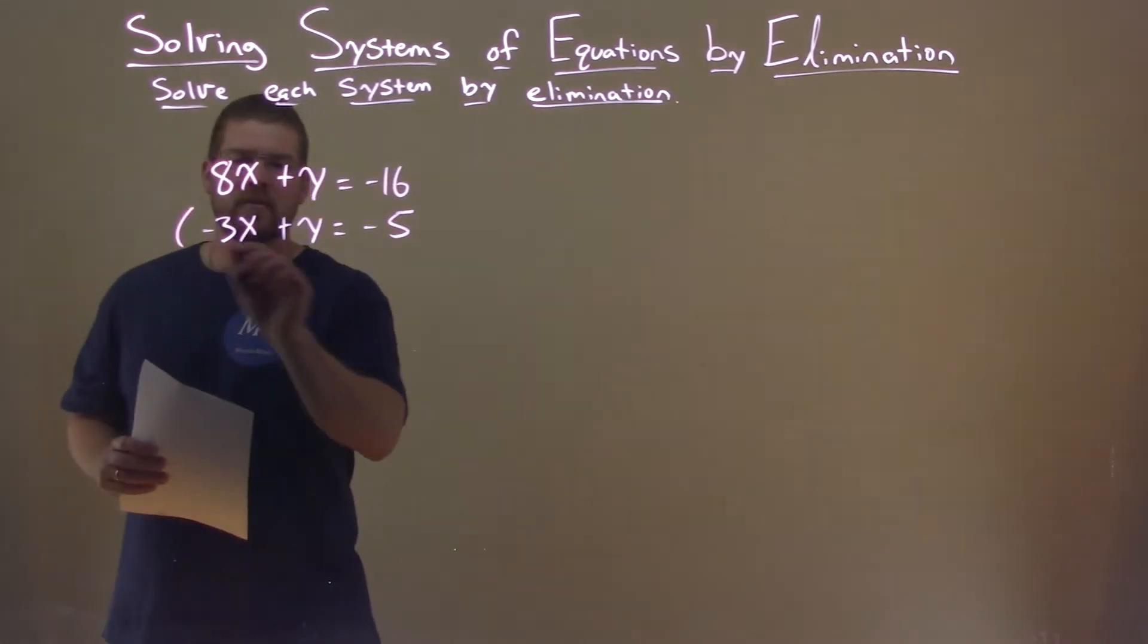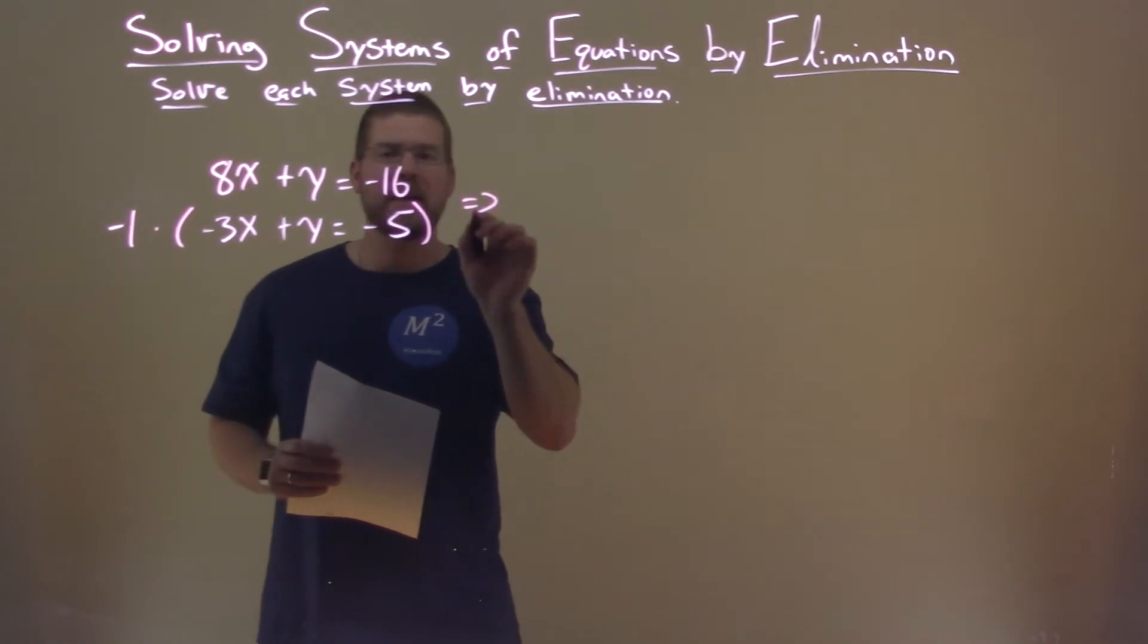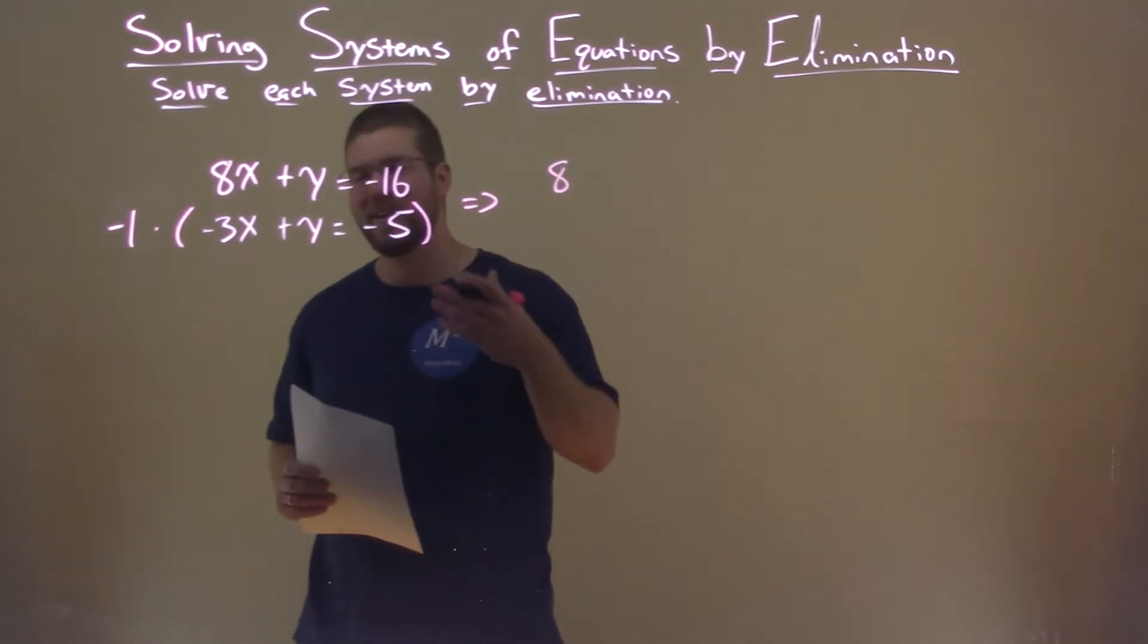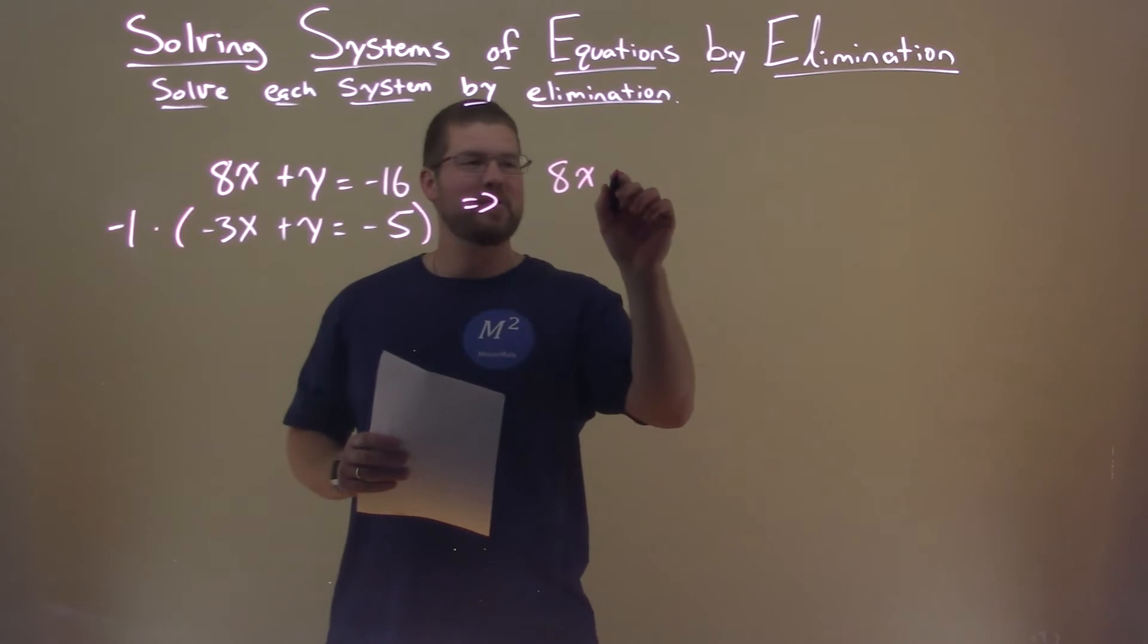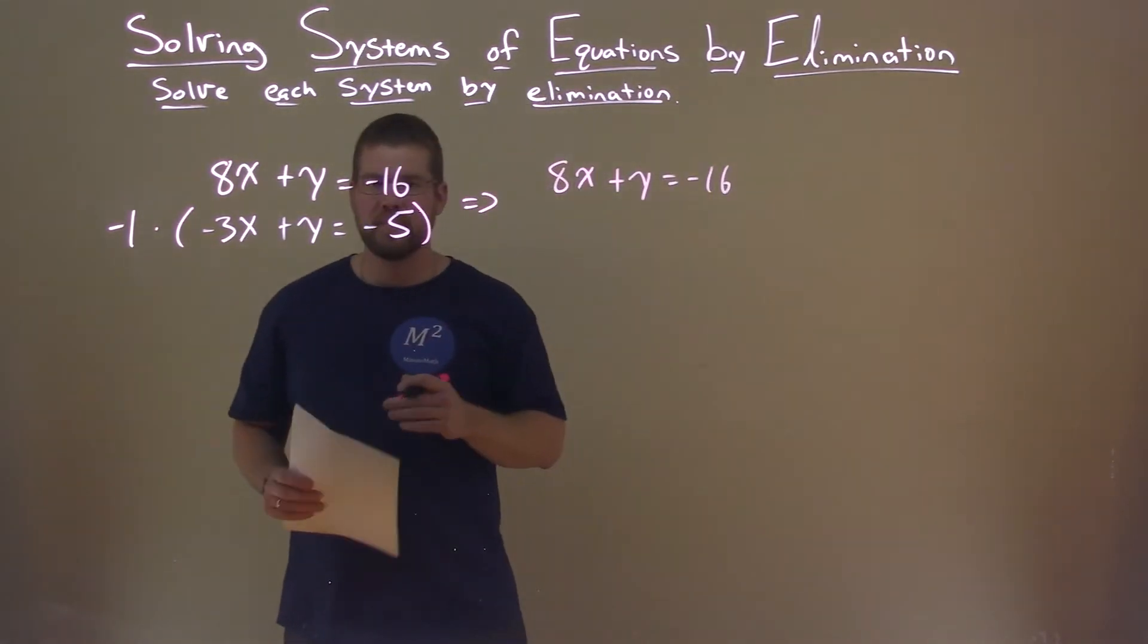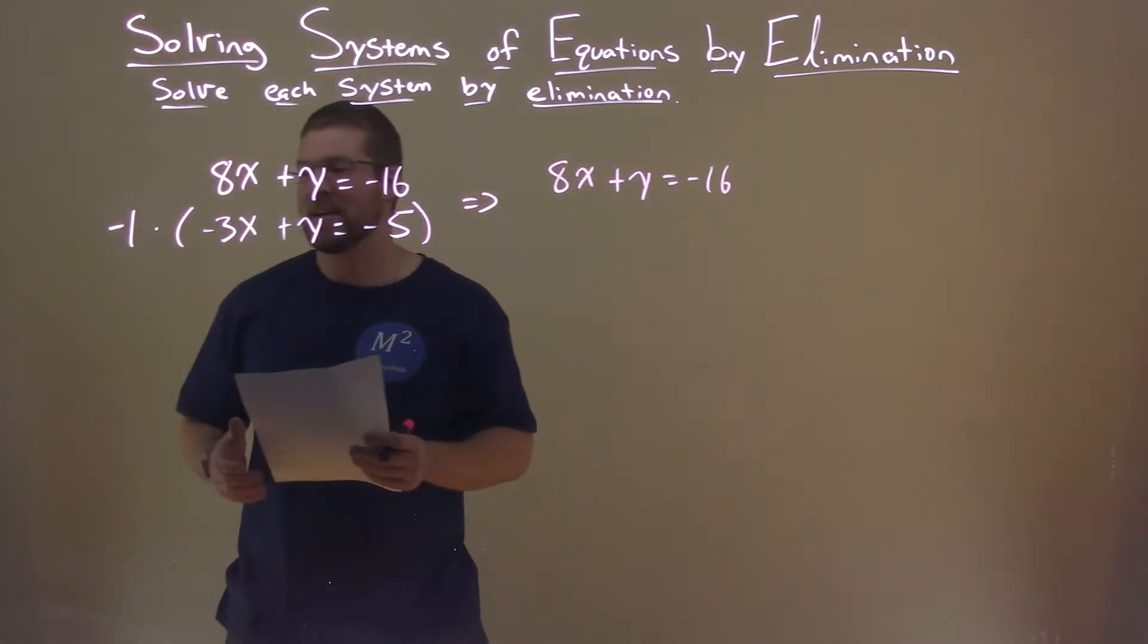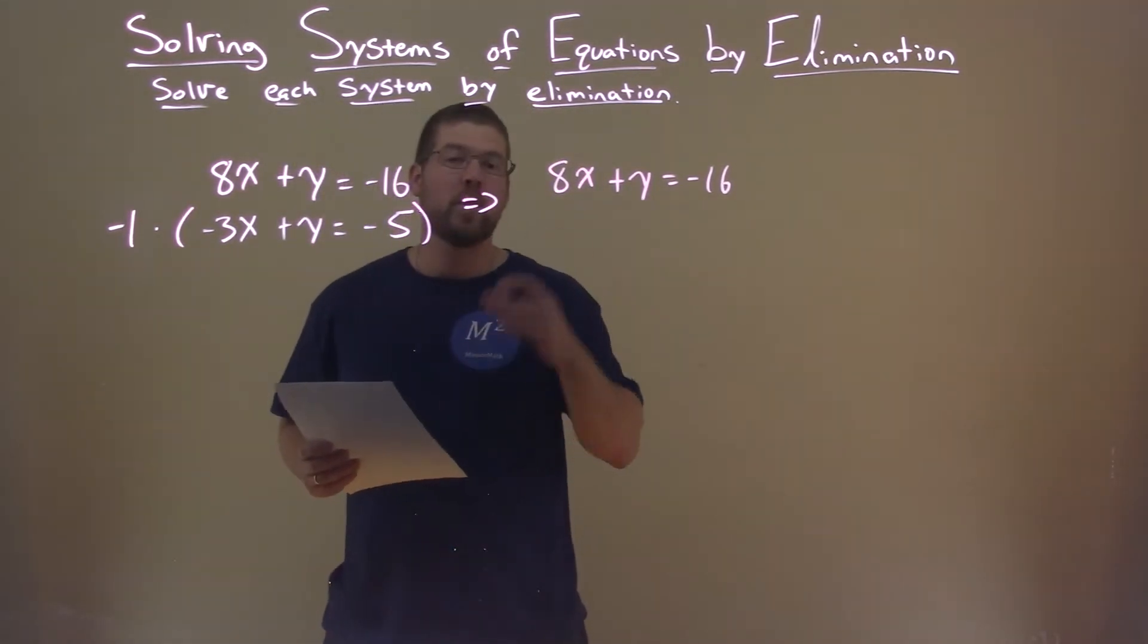So I'm going to take my second equation and multiply it all by a negative 1. What does that give us here? The top equation, 8x plus y equals negative 16, which stays the same. The second equation, we multiply by negative 1 to all parts.